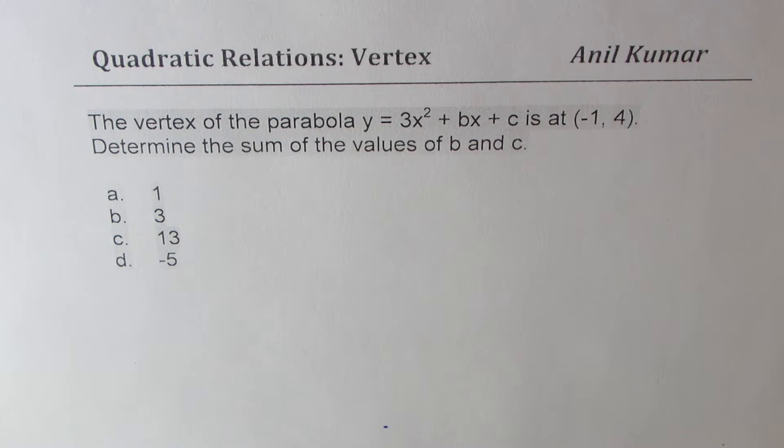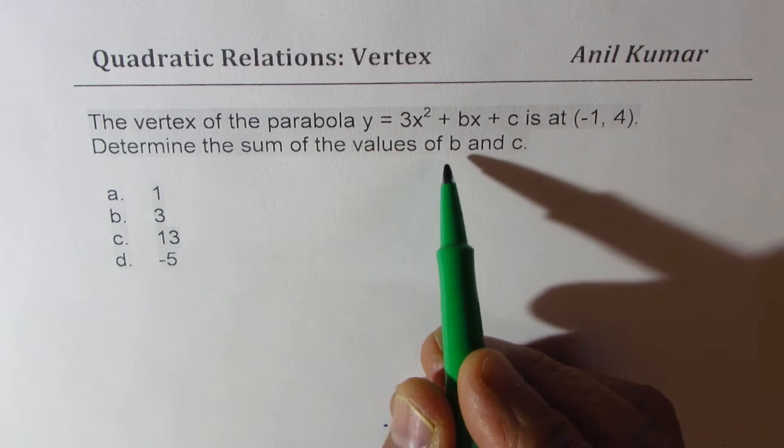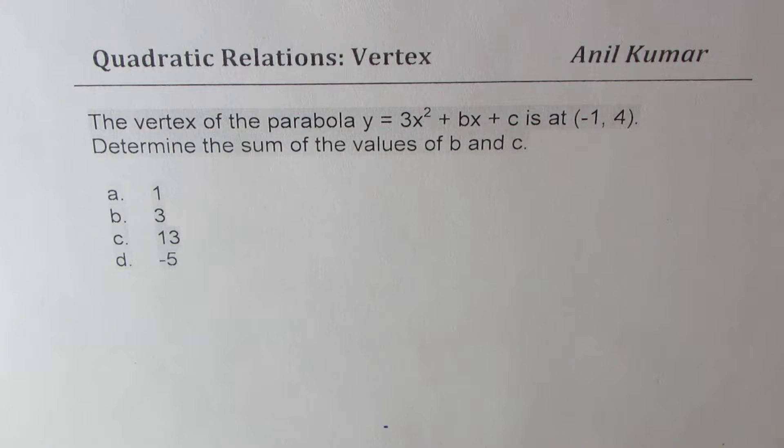I'm Anil Kumar sharing with you a practice question for competitive exams like SAT. The question here is the vertex of the parabola y equals 3x squared plus bx plus c is at minus 1, 4. Determine the sum of the values of b and c. Four options are given to you.